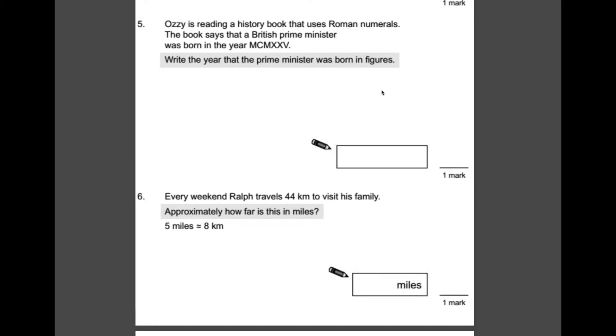Number 5. Ozzy is reading a history book that uses Roman numerals. The book says that a British Prime Minister was born in the year MCMXXV. Write the year that the Prime Minister was born in figures. So, this is obviously a test of your Roman numerals. What you should know is that M stands for 1,000. C stands for 100. X stands for 10. And V stands for 5. So, using your knowledge of Roman numerals, we should be able to piece together what this number is. So, we have the first bit. That's 1,000. Now, this bit here is important. CM. That is 100 before 1,000. So, 100 before 1,000 is 900. So, we've got our 19 there. And to finish off our date, we have two Xs in a row, which means 20. X, X, 10, 10, which makes 20. And finally, V, which is 5. So, we have 1925.